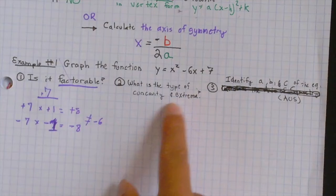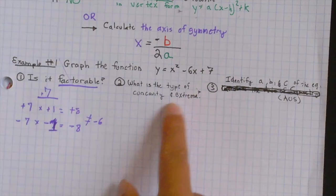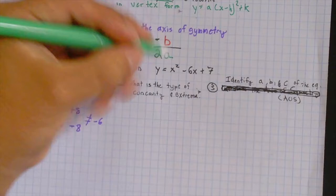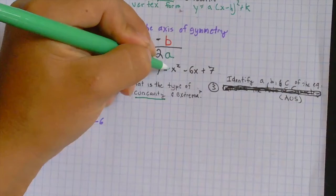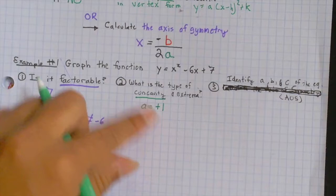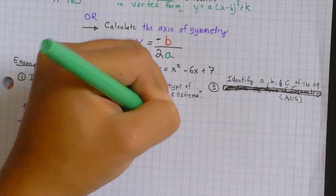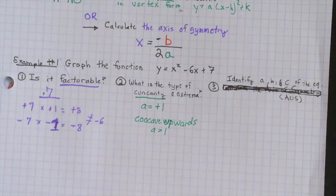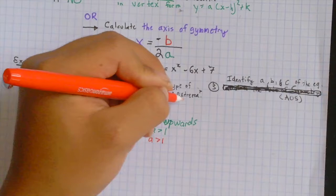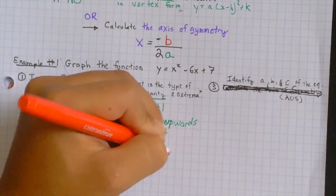Now, the second question is, what type of concavity and extrema do we have? As far as concavity goes, we have to look at our a value. A equals a positive 1, therefore, it is concave upwards. Anytime a is greater than 1, it's concave upwards. Also, anytime that a is greater than 1, our extrema is going to be a minimum. So, that is our extrema and our concavity.